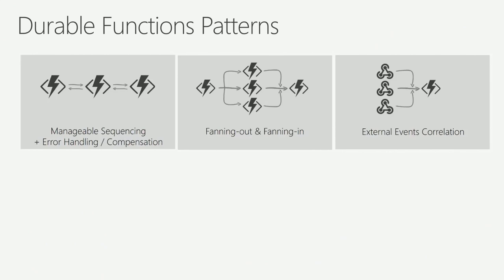External events correlation is another pattern. Imagine you're hiring a new employee and three events have to happen: they upload their driver's license, upload their social security information, and upload some form. You want to wait until all three have happened and then continue — maybe fire a function saying hey, you've uploaded everything you need. With durable functions you can write code that waits for those three external events, and when all three have occurred, continues on. Also written in .NET code, just like before.